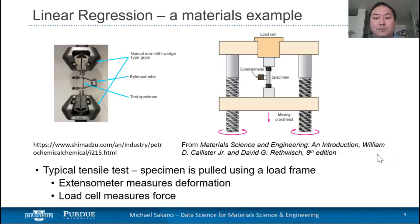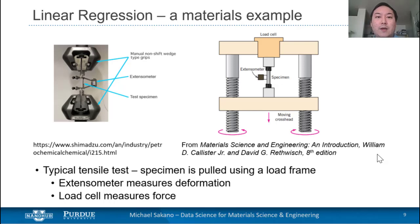Now let's apply this to an actual materials example. We'll discuss the application of linear regression in the context of materials science, covering two examples that will be part of the hands-on tutorial for you to do yourself. The first example focuses on extracting materials properties — specifically mechanical properties from uniaxial tensile tests. Shown on the right side of the screen is a schematic representation of a typical tensile test, where a specimen is pulled apart in tension using a load frame. Two material properties we're going to obtain from this test are: first, the deformation of the material — how much the material deforms upon being pulled in tension, measured using an extensometer.